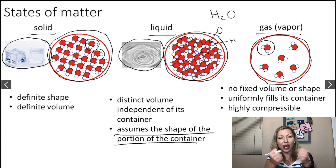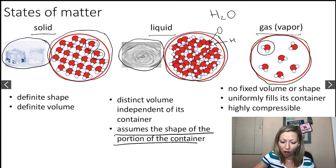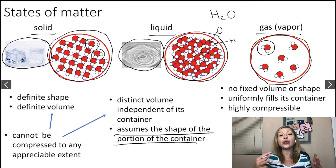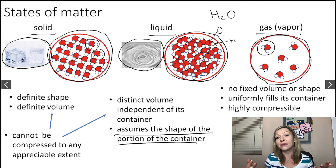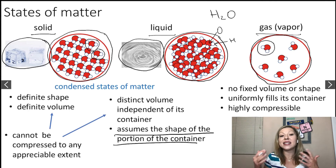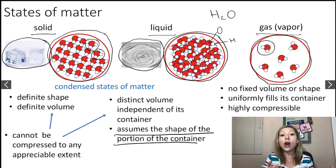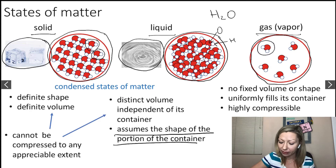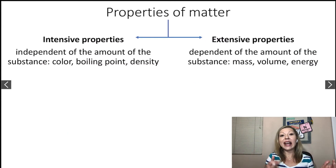How about compressibility? Both solids and liquids have so many molecules that are relatively close to each other. In the case of liquids, molecules can still pass each other, but it's crowded, so they are not going to be compressible to any appreciable extent. We call the solid and liquid phases the condensed states of matter.